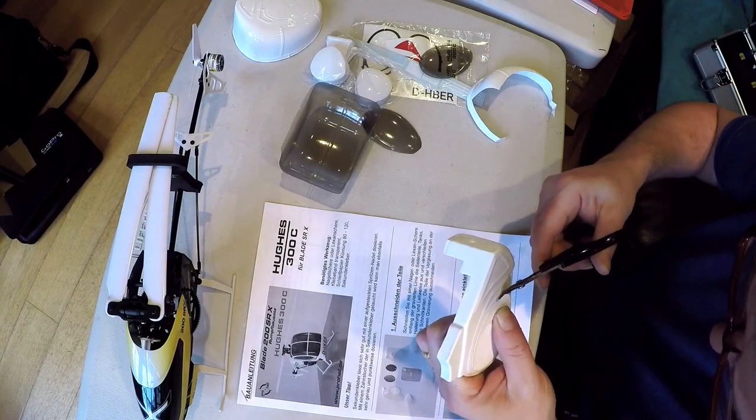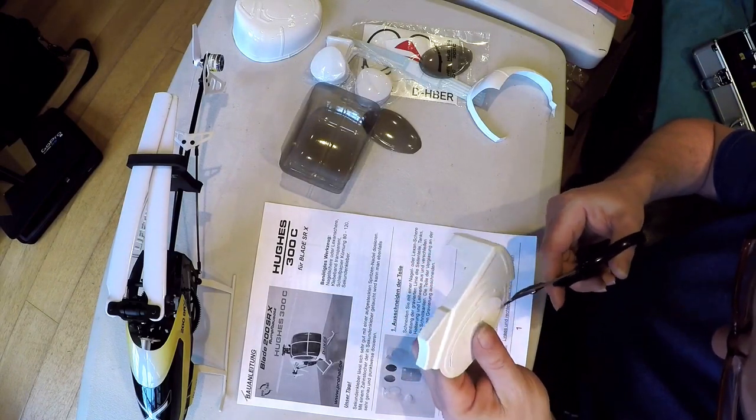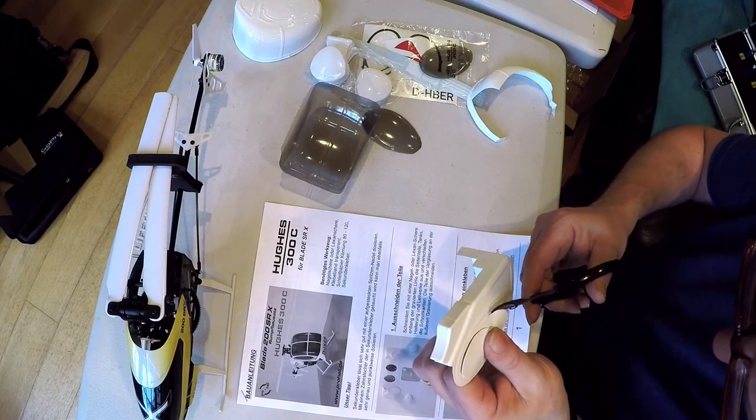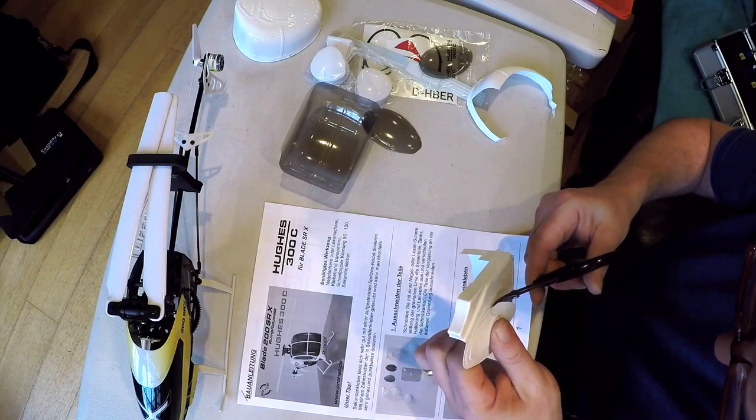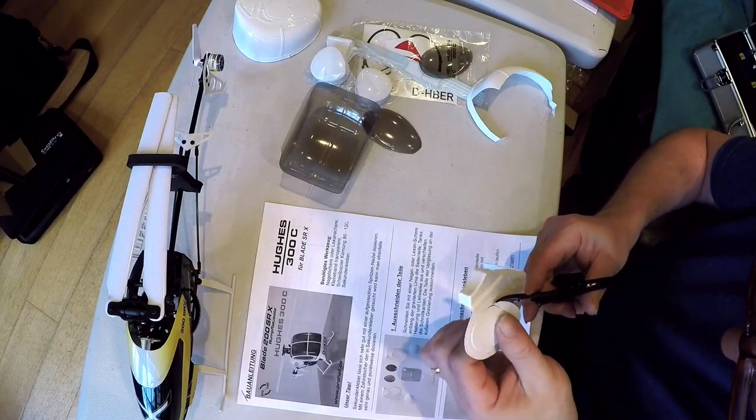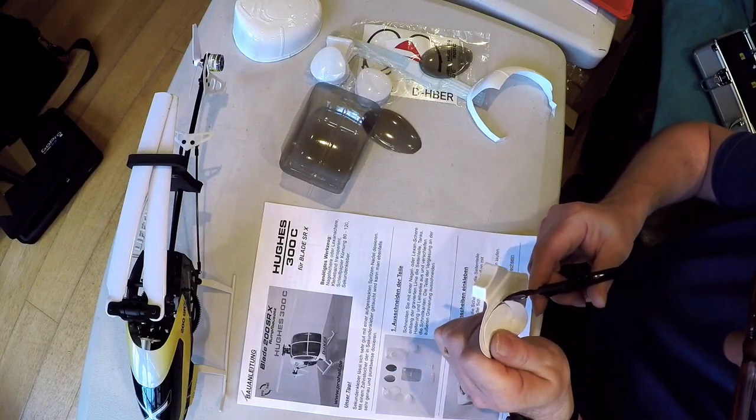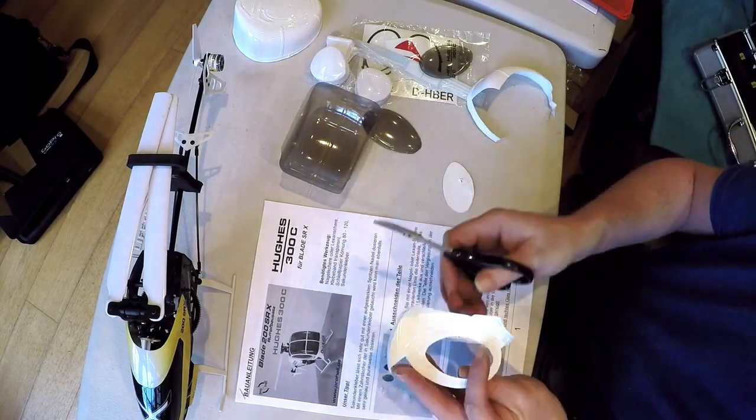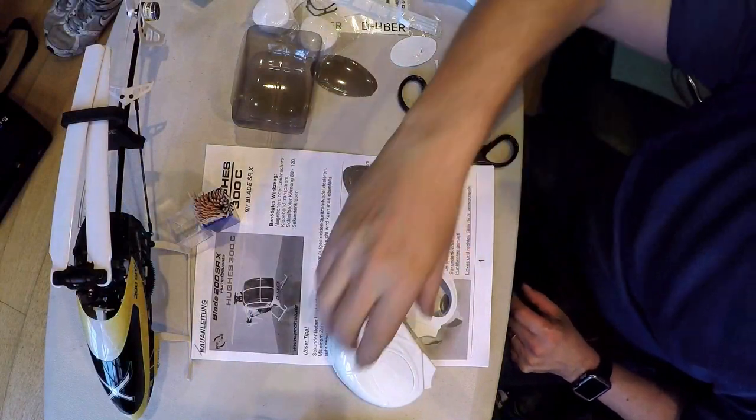Any normal scissors I think would make the job too difficult to get around the curves. I guess you could probably use a modelling knife. But I've certainly found with radio control cars, the lexan bodies, the scissors are generally the best thing to use.